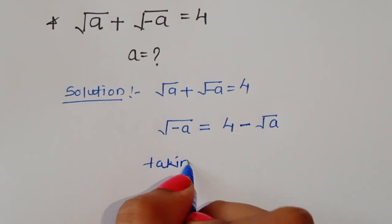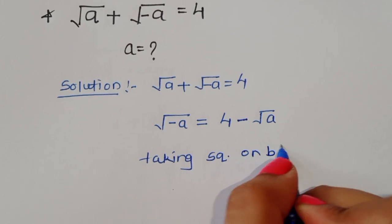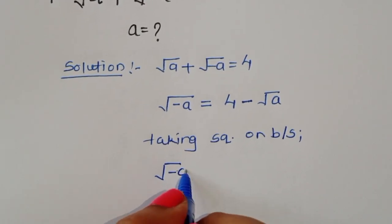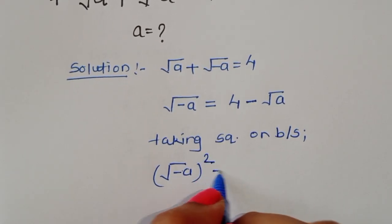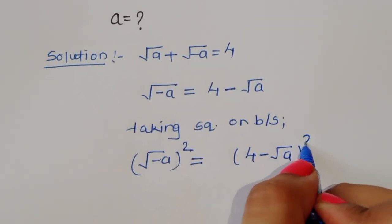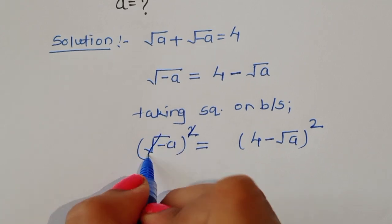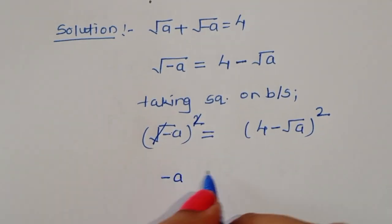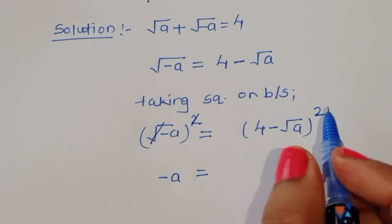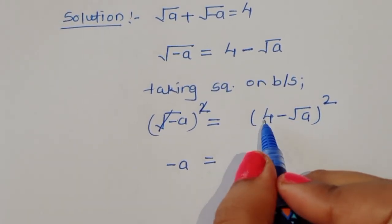Taking square on both sides, we get: (√(−a))² = (4 − √a)². The square cancels from the square root on the left, giving −a. On the right, this is an (a − b)² expansion.